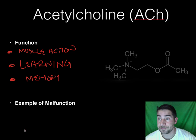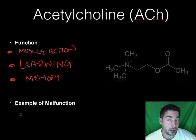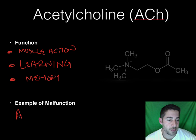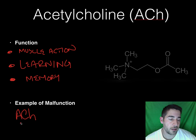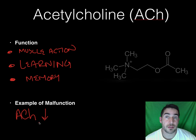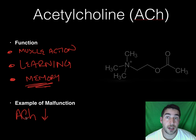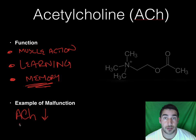An example of a malfunction: when you have Alzheimer's, the neurons that produce the acetylcholine — sometimes referred to as ACh for abbreviation — they go down. The neurotransmitters that make acetylcholine start to deteriorate, so you start producing less of it, which is why your memory starts to go down as you get more advanced in your Alzheimer's.